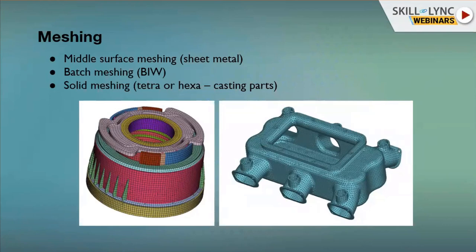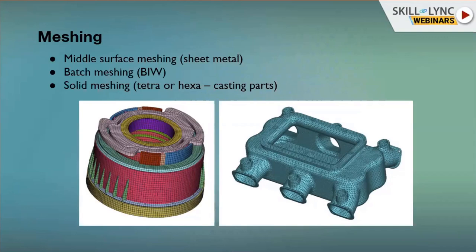For sheet metal we use middle surface meshing, but for casting parts such as engine parts, suspension parts, knuckle, or similar components that are more than five or ten millimeters thick, you should go for solid meshing using tetra or hexa elements. Hexa is a little difficult and time consuming, but gives very good results. Tetra is quite easy and convenient if you want a reasonable solution.